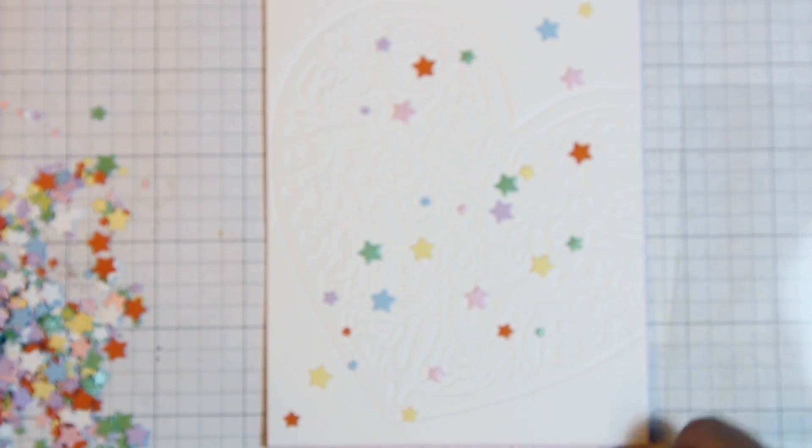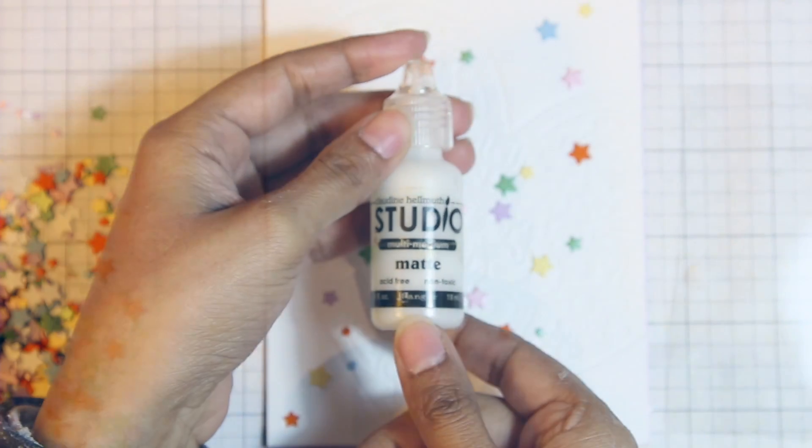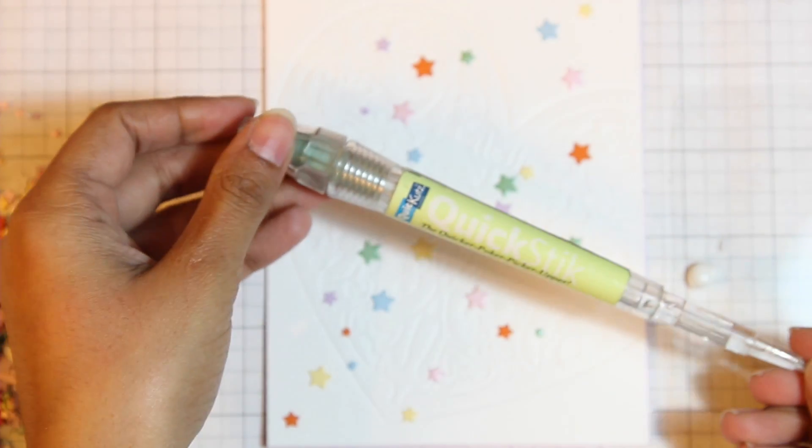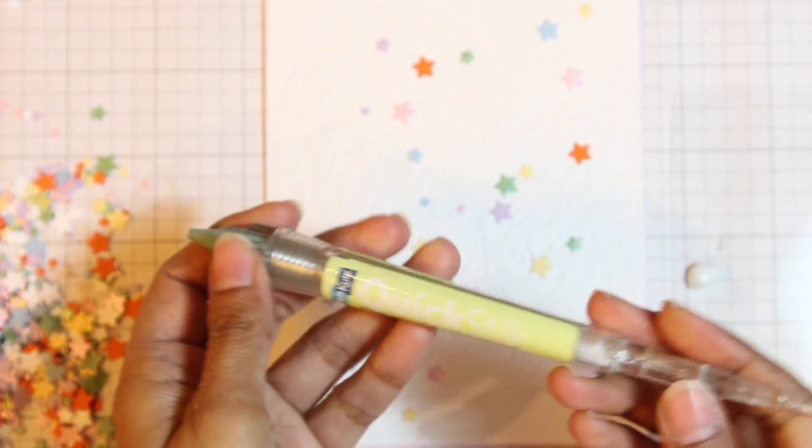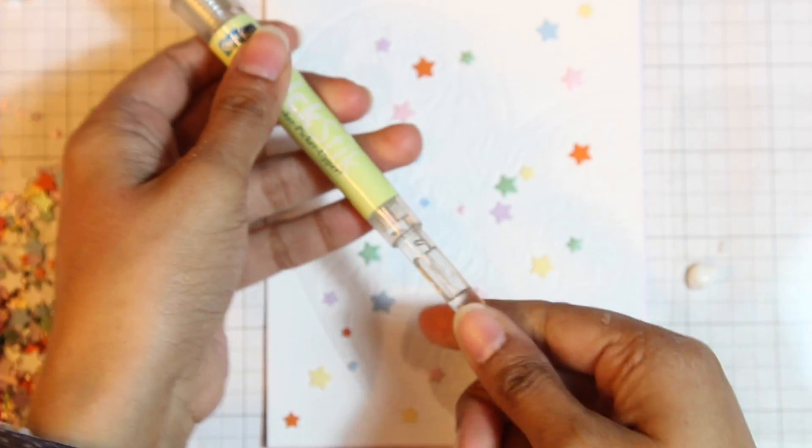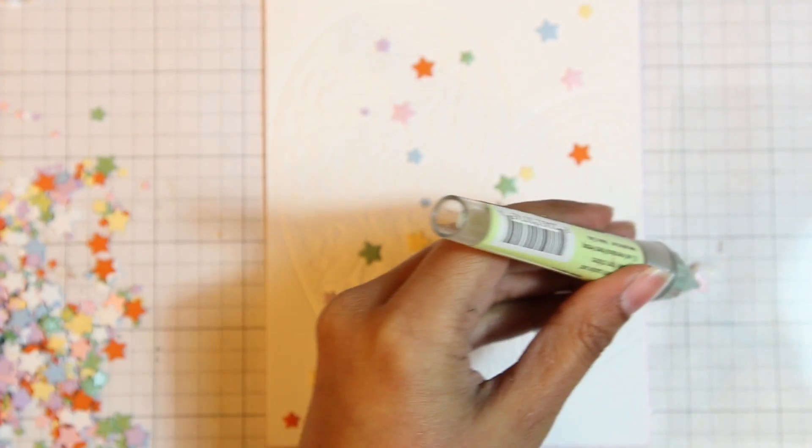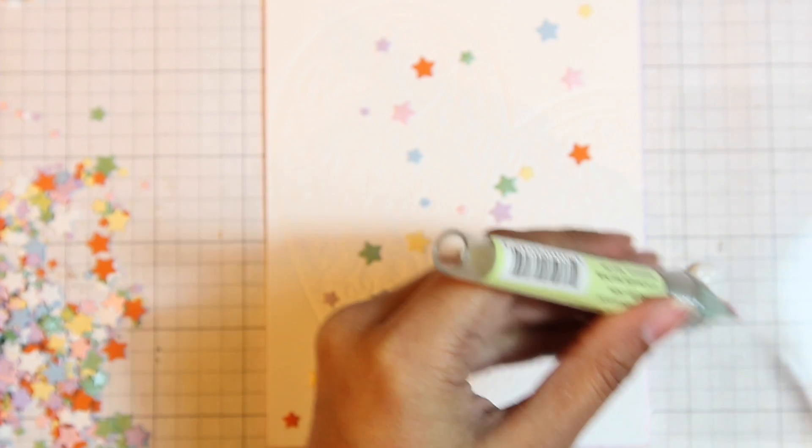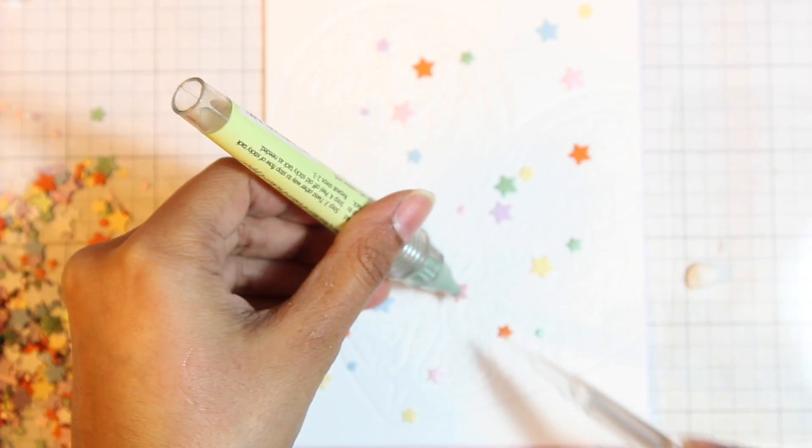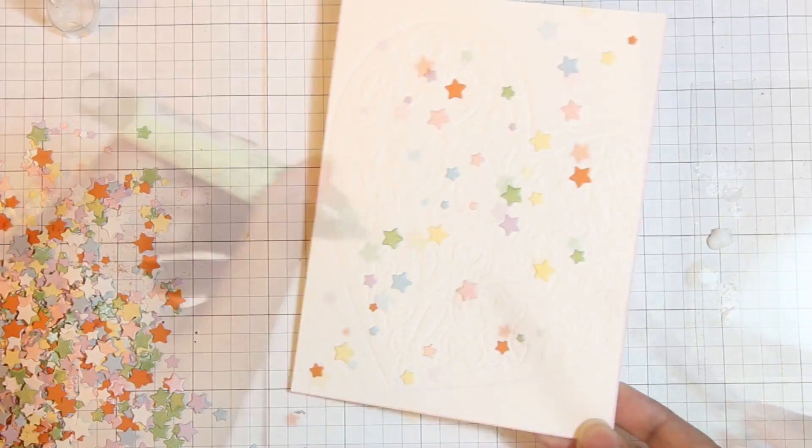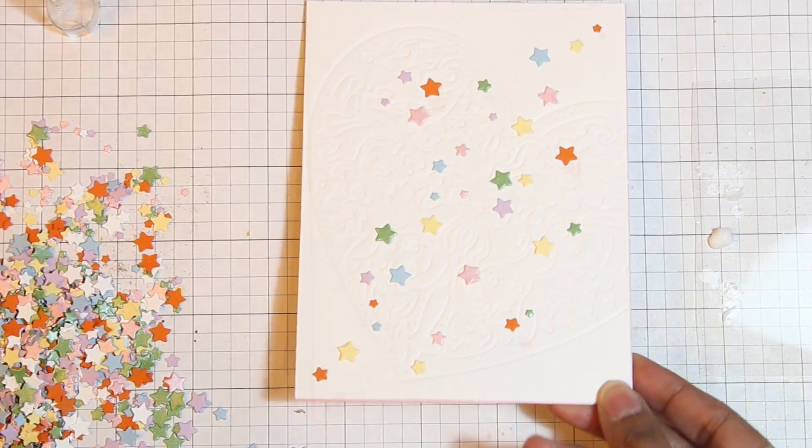I want there to still be some interest when all of the shaker content has fallen to the bottom of the card. So I'm just placing some of the stars and I'm going to glue them directly onto the background panel. To do this I'm going to be using some multi-mat medium and I'm going to be picking up the stars using this quick stick. It has a really useful pointer that pulls out of the bottom and an adhesive tip so that you can pick up different embellishments, dip them into the glue and then just use the reverse of that tip to push the embellishment in place.